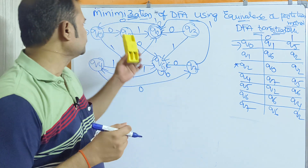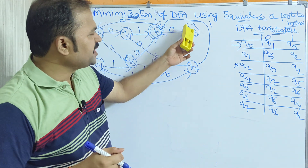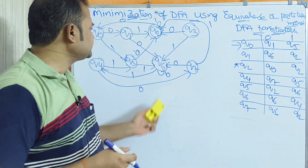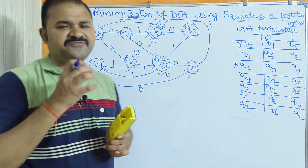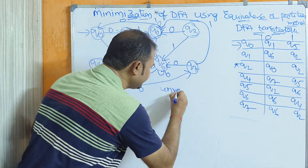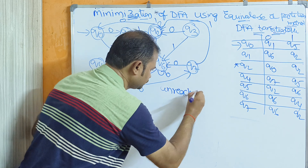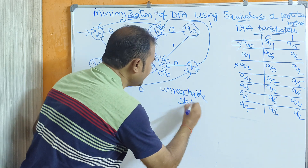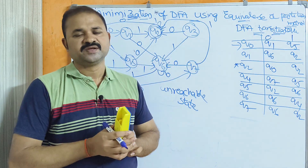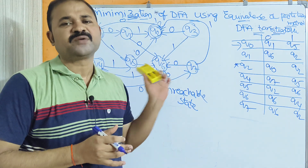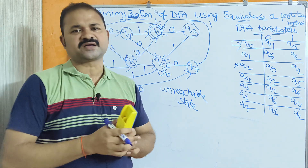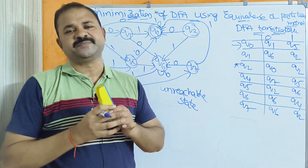Let us discuss minimization of DFA using the equivalence or partition method. This is the DFA. First we have to find out if we have any unreachable states. We have 8 states from Q0 to Q7. We have to traverse each state from Q0 — the initial state — via a direct path or through intermediate states.